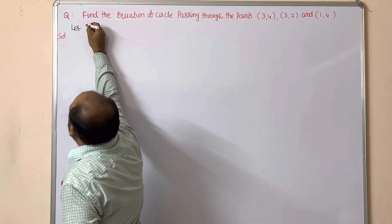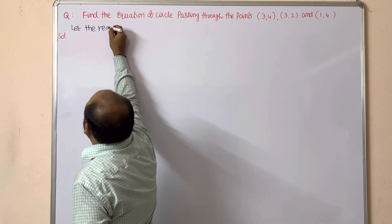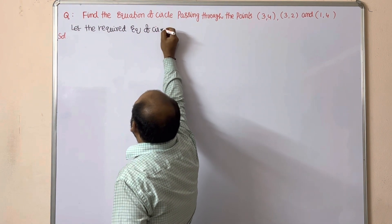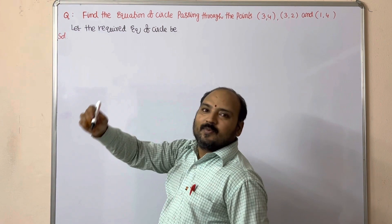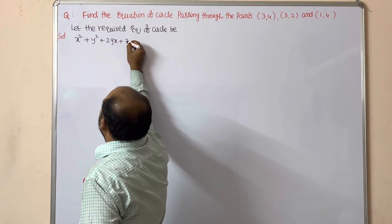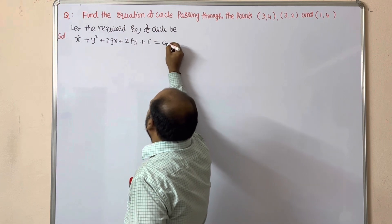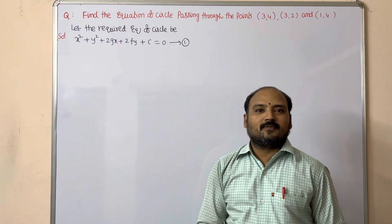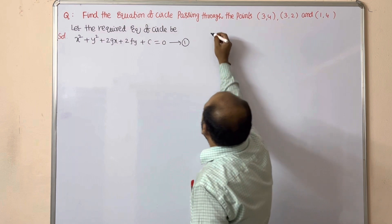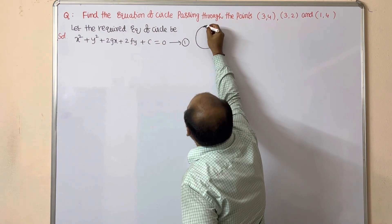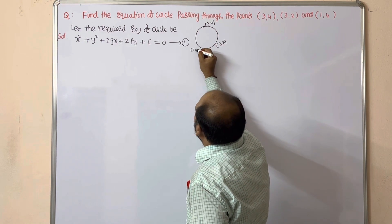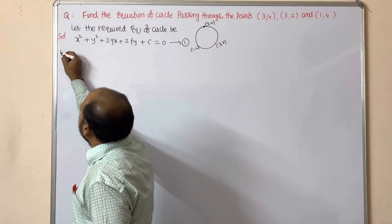To calculate the equation of a circle passing through three points, let the required equation of the circle be the general equation: x² + y² + 2gx + 2fy + c = 0. Keep it as Equation 1. This equation passes through the first point (3,4), second point (3,2), and third point (1,4).